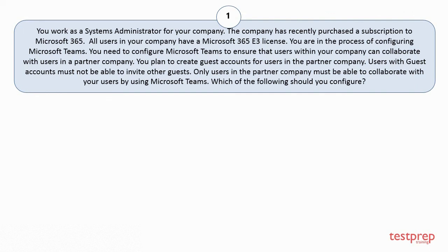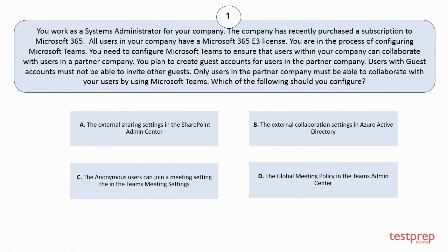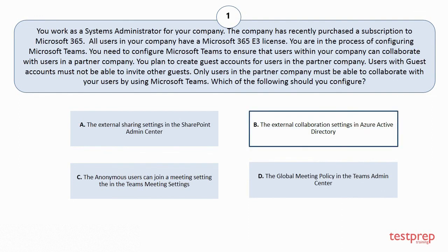Your options are: A. The External Sharing Settings in the SharePoint Admin Center. B. The External Collaboration Settings in Azure Active Directory. C. The Anonymous Users Can Join a Meeting Setting in the Teams Meeting Settings. D. The Global Meeting Policy in the Teams Admin Center. The correct answer is Option B.